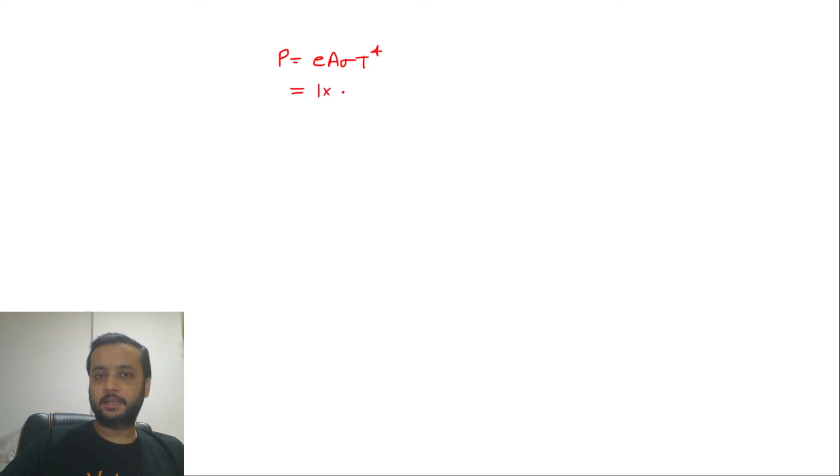Emissivity 1 because black body, area 64 mm² which is 64 × 10⁻⁶, sigma 5.67 × 10⁻⁸ SI units, temperature 2500 Kelvin to the power 4. If we solve and multiply, we get the value of 141.75 watts.